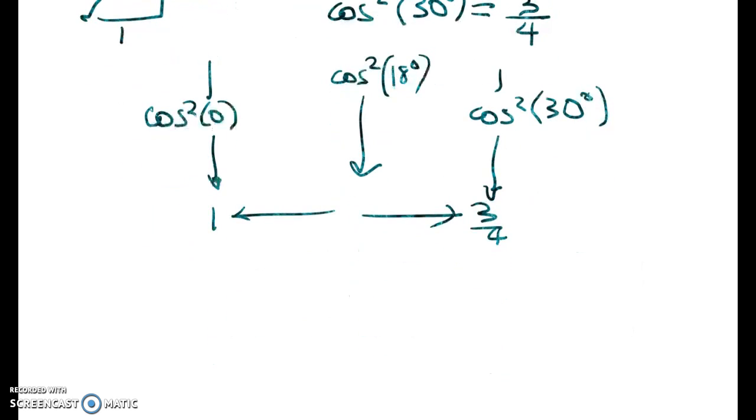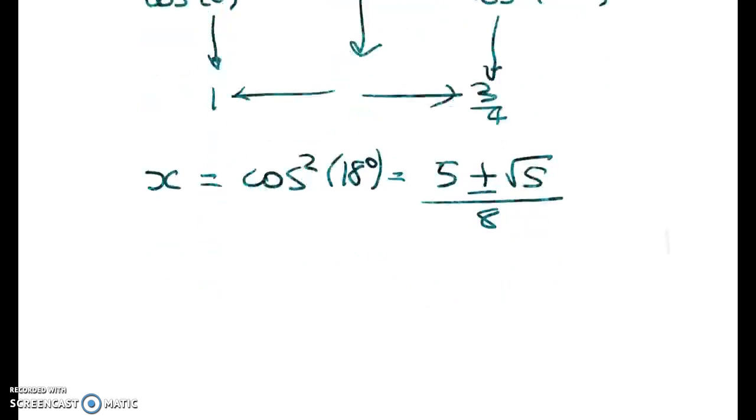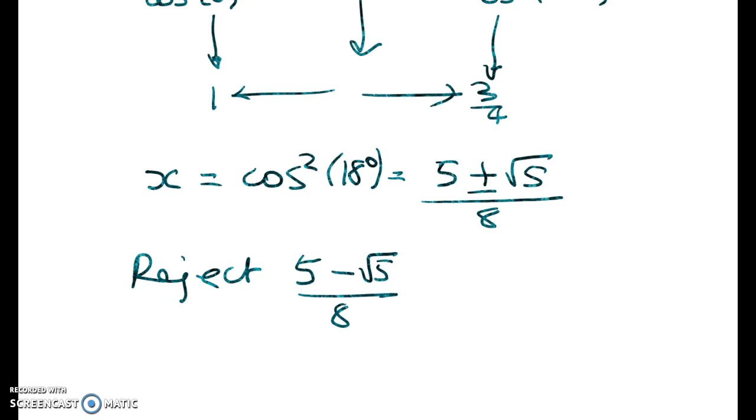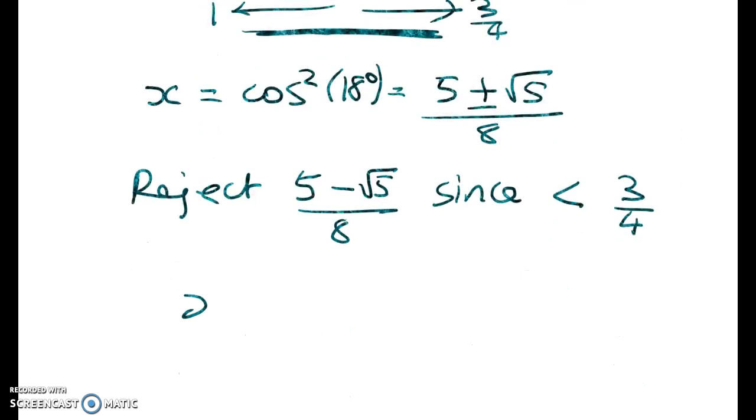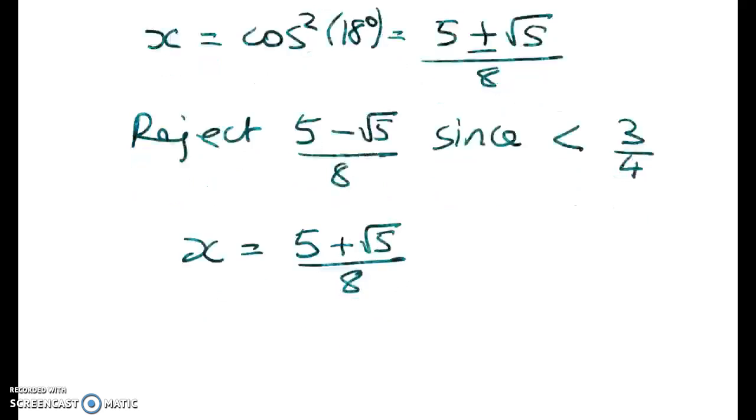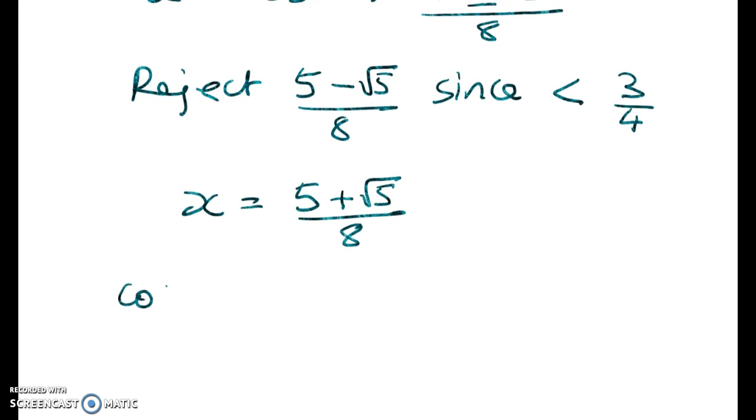Okay, so working back to what we had, we had x, which is cos squared of 18, is equal to 5 plus or minus root 5 on 8. But we can reject the lower of those, because if you go 5 minus root 5 on 8, it's less than 3 quarters. In other words, it's not in the range where we know it should be. So we're going to go with this, x is equal to 5 plus root 5 divided by 8. So that's cos squared of 18.